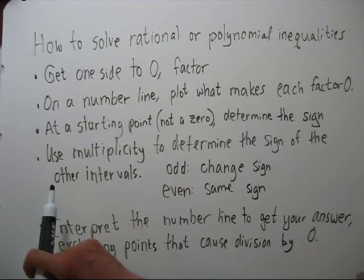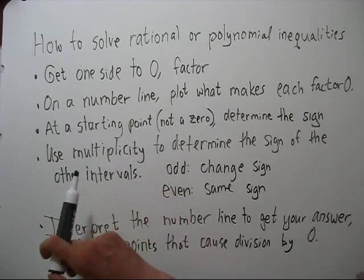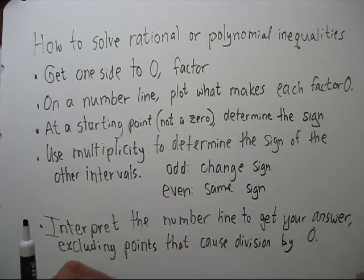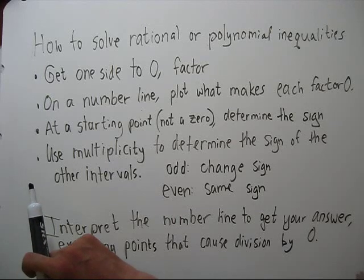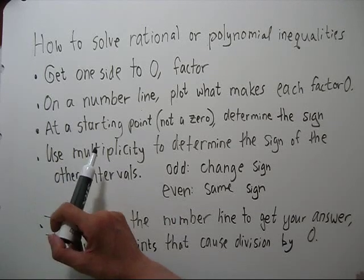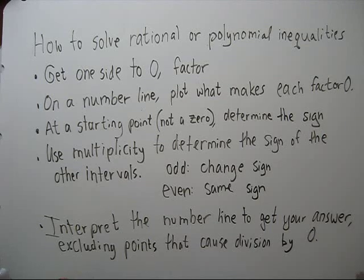Then pick a starting point. It can't be one of the zeros. And determine the sign of the left side of your inequality when you plug that starting point in. You don't actually have to find the number. Just determine whether it's positive or negative.